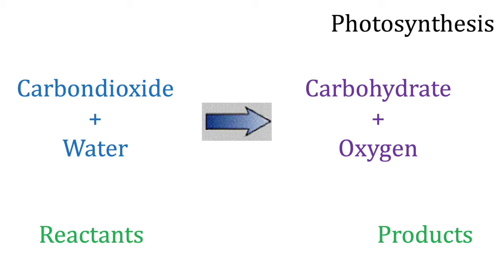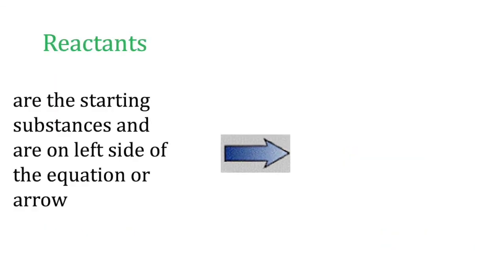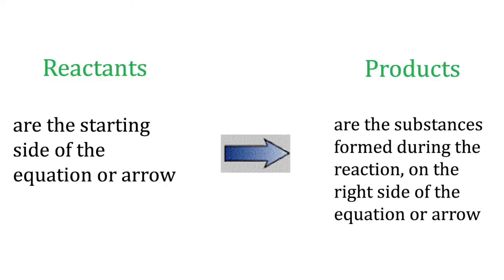We need to know more about what reactants and products are. Reactants are the starting substances which are on the left side of the equation, while products are the substances formed after a chemical reaction and are on the right side of the equation or arrow.